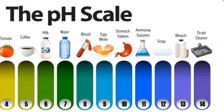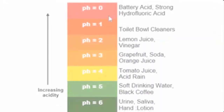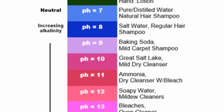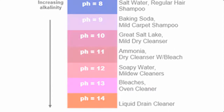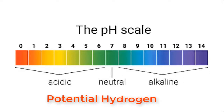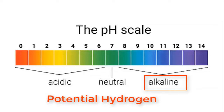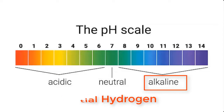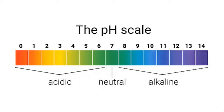Before we go into how to test the pH of your liquid soap or any other product, let's try to understand the basic chemistry of pH. pH, which literally means potential hydrogen, is a term used to describe the degree of acidity or alkalinity of a solution. A solution can either be acidic, alkaline, or neutral. An example of a neutral solution is water.